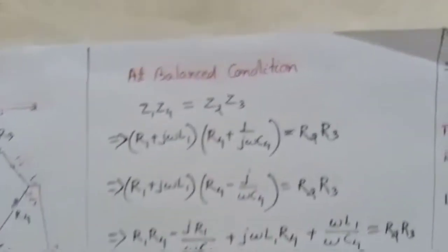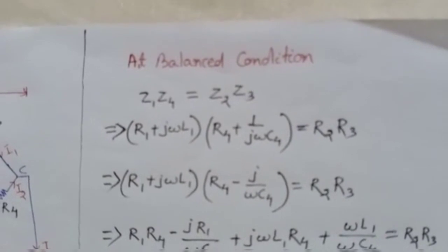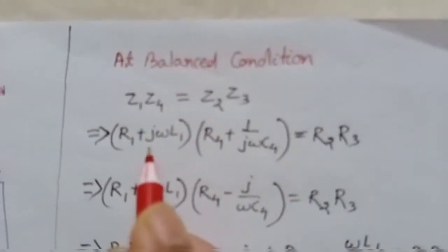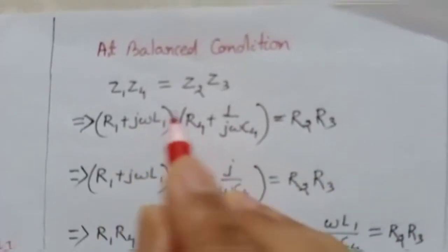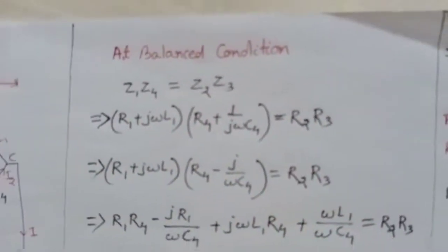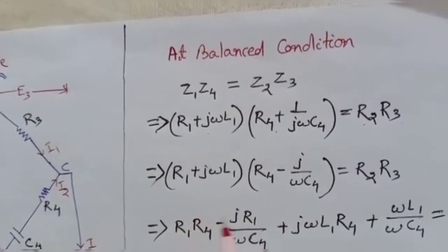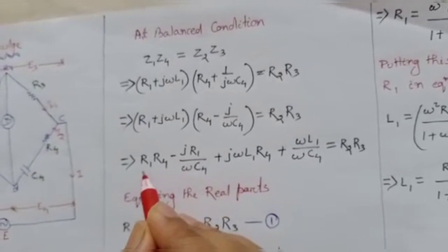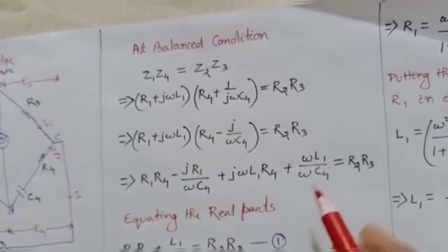To make the bridge balanced, we write down the bridge balance equation: Z1·Z4 = Z2·Z3. Putting the values of Z1, Z4, Z2, and Z3 into this balance equation and solving further, we get an expression from which we equate the real and imaginary parts.